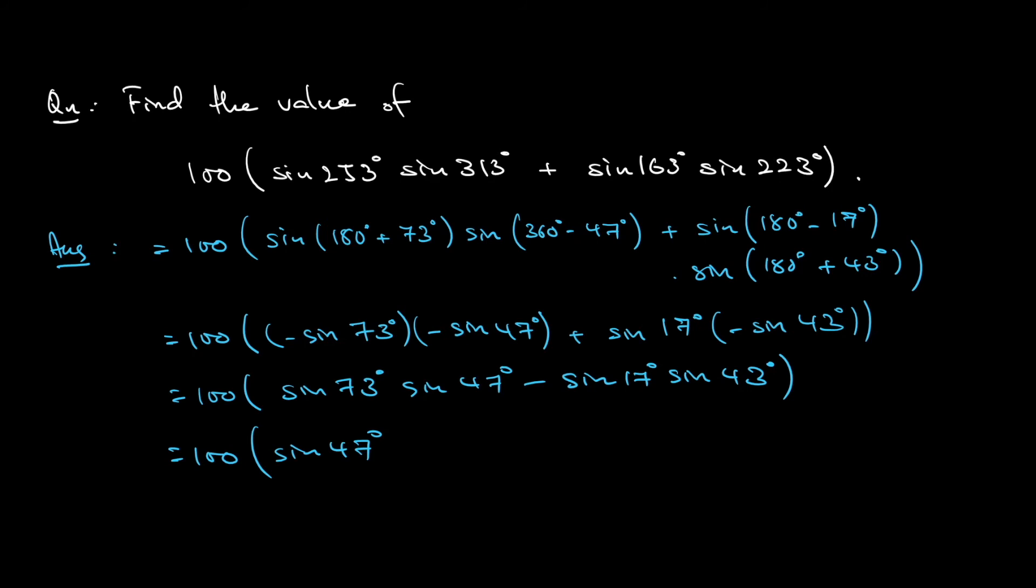So this will become sine 47 degrees cosine 17 degrees. This will become sine 17 degrees, which is in fact 90 degrees minus 47 degrees. So that becomes cosine 47 degrees sine 17 degrees.